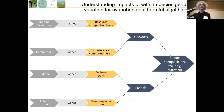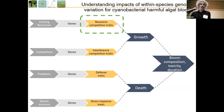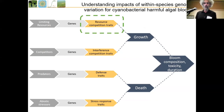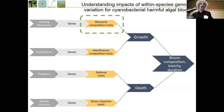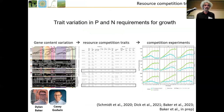In a general traits framework, we can figure out the ecological success of an organism and its impact on the system — composition, toxicity, duration — there's a variety of traits that underpin how much it grows and how much it dies. I'll focus first on some resource competition traits work we've been doing: basically how can these organisms compete for the limiting nutrients that are there. If you can compete better, you're going to win. We focus on phosphorus and nitrogen, since those are quite important as limiting nutrients in these systems.